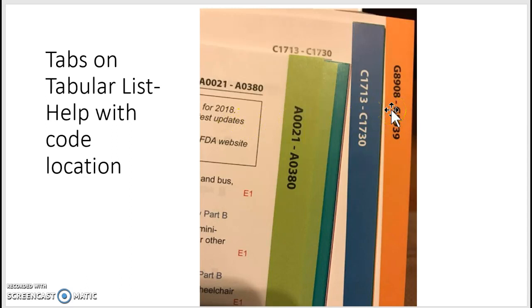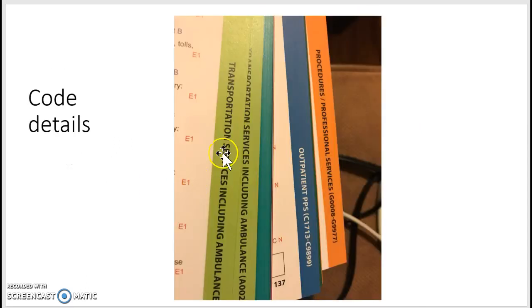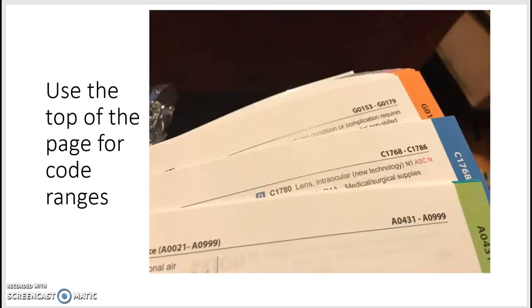As you can see, the book is already tabbed for you — A, C, G — and as you turn the pages you'll follow A, B, C, D in different color codes depending on which section you're in. The green section is for transportation services; we also have outpatient PPS, procedures, and professional services. Look at the top of each page — the code range is shown there, so just turn the pages until you find the correct code range.